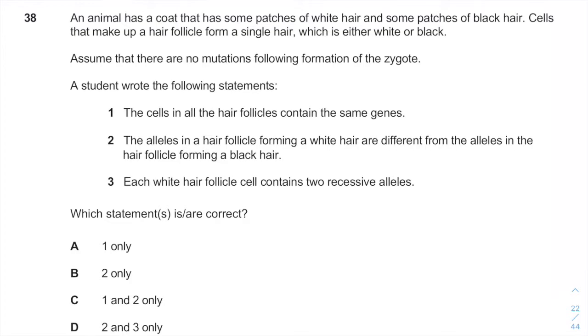An animal has a coat that has some patches of white and some patches of black hair. Some animals show this, usually female animals, for cats for example, have something that is very special for females specifically and it's the formation of bar body from its chromosome and the expression of a single X chromosome inside each cell.